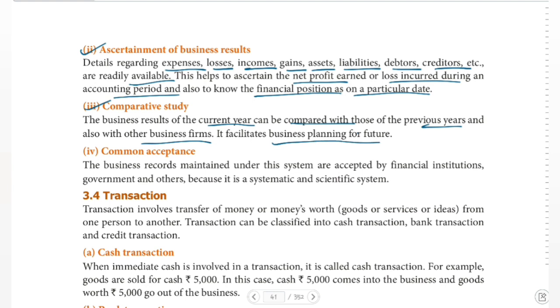In the double entry system, all debit and credit transactions — expenses, losses, incomes, gains, debtors, and everything else — are recorded. This makes comparative study easy. For example, you can take this year's expenses and compare them with last year's expenses.